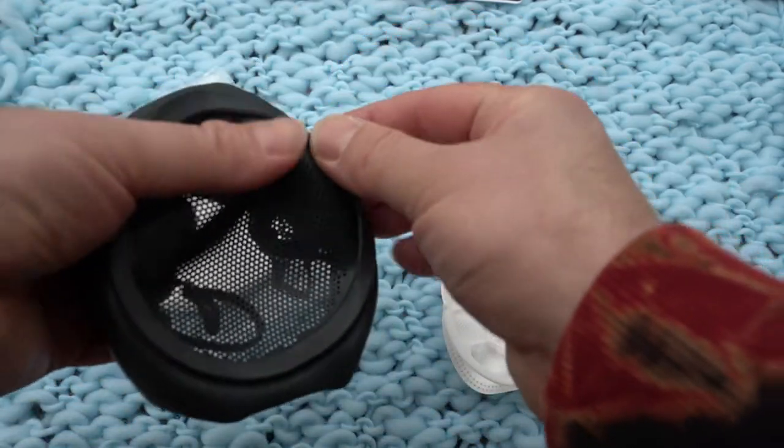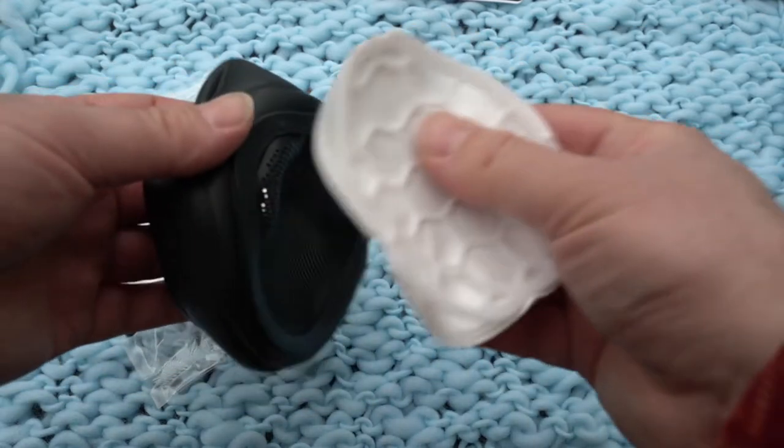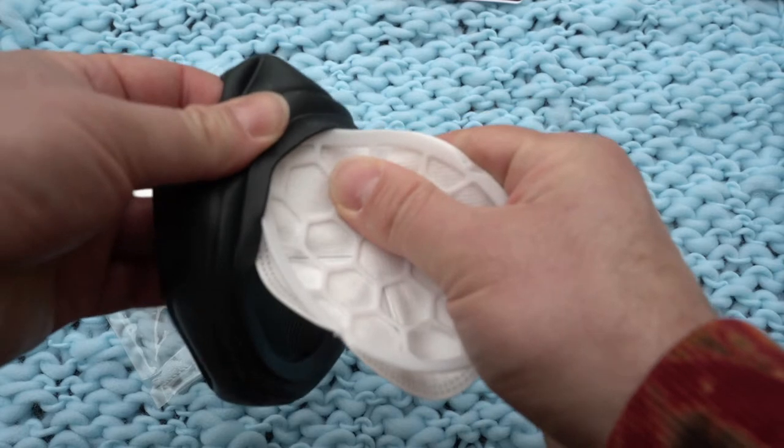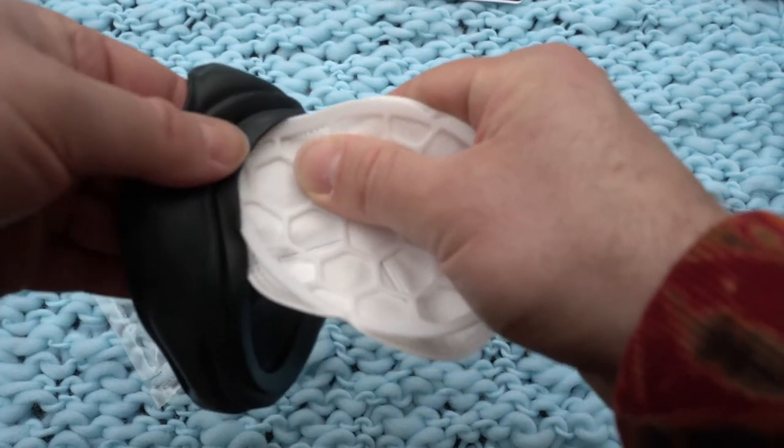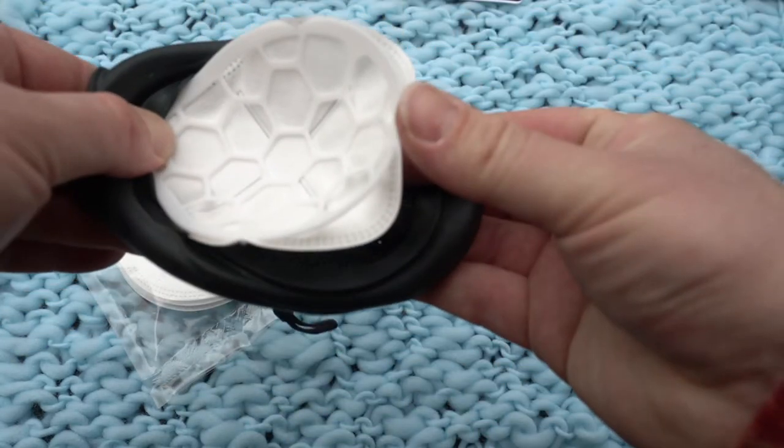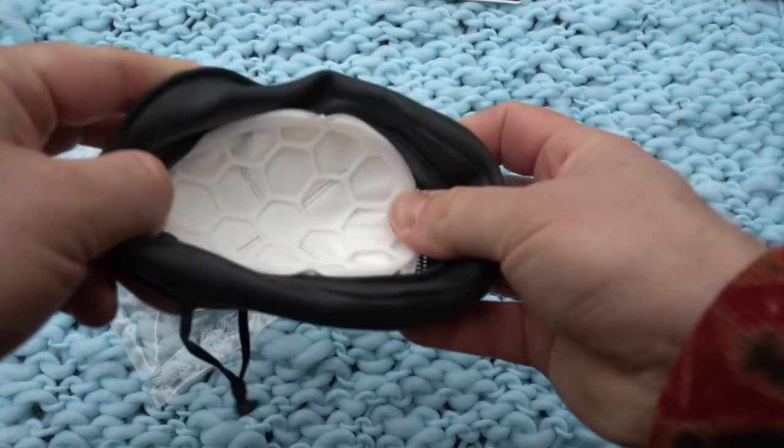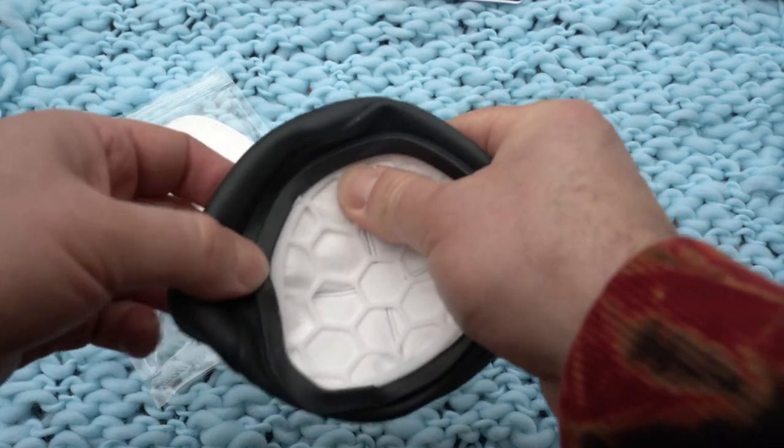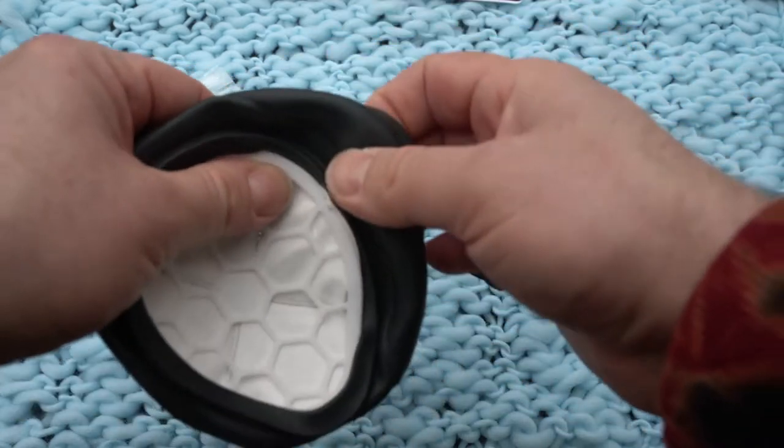There's a lip here on the inside. You just need to put the filter and filter frame combo into the mask. I'm just going to pinch it and push it. When you buy the mask, it comes with two reinforcement frames. You only need one, the other is an extra.